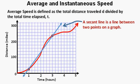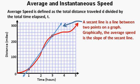Here's a graph of distance dependent on time. Time is in hours and the distance is in miles traveled. Graphically, the average speed is the slope of the secant line.